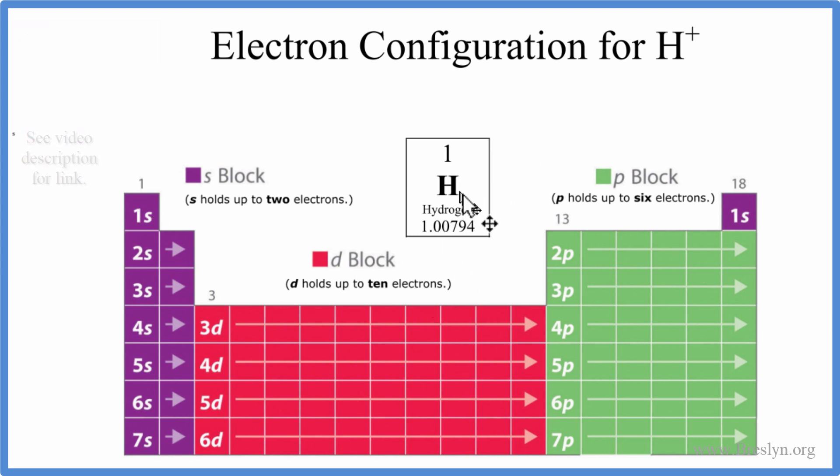So hydrogen, since it's neutral here, that means the protons are equal to the electrons. The atomic number here tells us the number of protons. So we only have one proton, and that means, because it's neutral, we only have one electron.